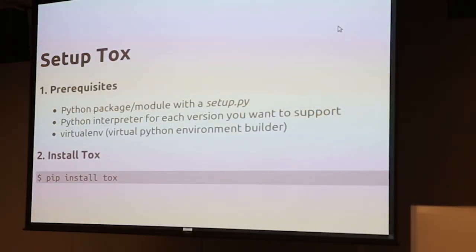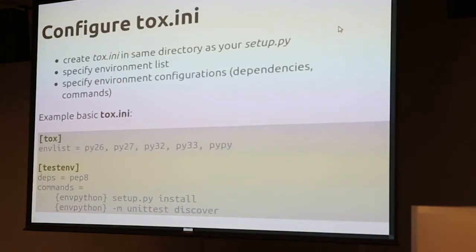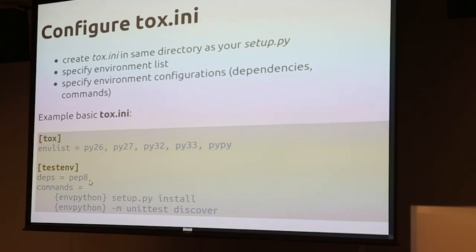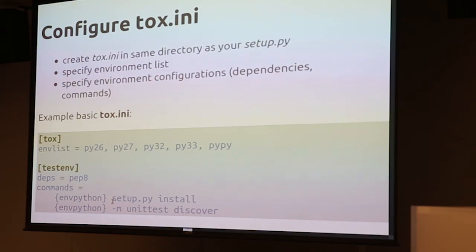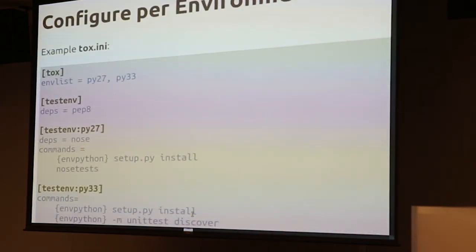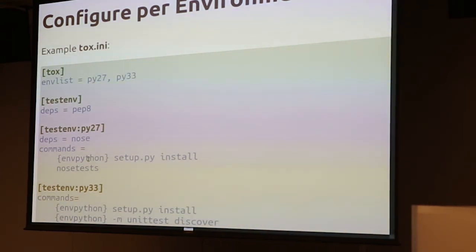You need to have basically a setup.py. After that you pip install Tox system-wide. Here's the INI format - you just give it a list of environments. Here I want to run against Python 2.6, 2.7, 3.2, 3.3, and PyPy, assuming I have all those installed on my machine locally. You give it test dependencies - I just have pep8 as my dependency, but you might have a whole list. It'll automatically install those in each of your different virtual environments. Then you specify what commands you want to run. You can also have a 2.7 environment with certain prerequisites and a 3.3 environment with a slightly different setup.